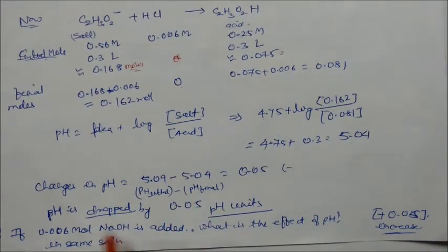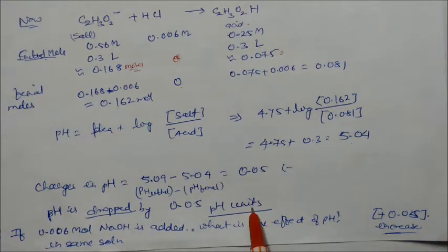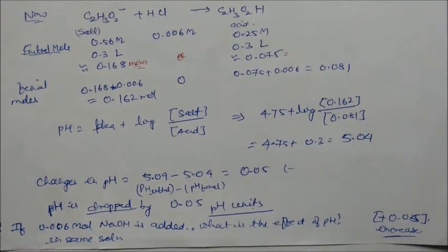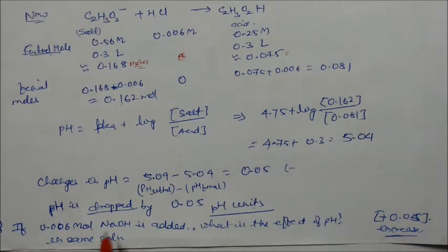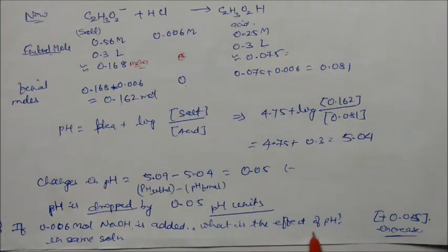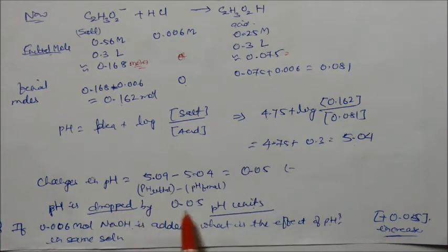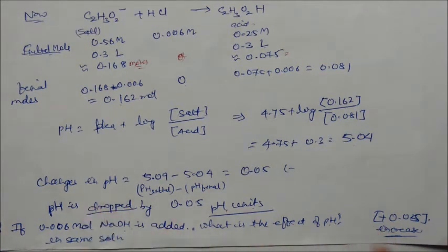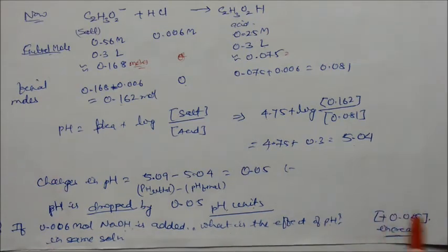As a practice exercise, if you add 0.006 mol sodium hydroxide to the same solution instead of HCl, the pH will increase by 0.05 units — symmetrically opposite to the HCl case. Try to solve it yourself and you will get this answer.